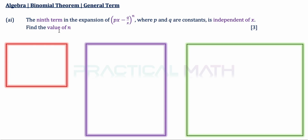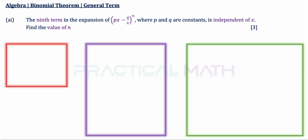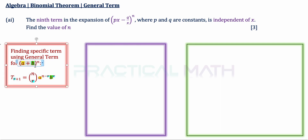In Part A1, we are told that the ninth term in this binomial expansion is independent of x. The ninth term refers to Term 9. A specific term can be found using the general term formula: for the expansion of (a + b)^n, any term can be written as T(r+1) = nCr · a^(n-r) · b^r. With that in mind, we can start our Part A1 solution.